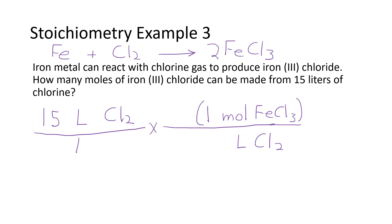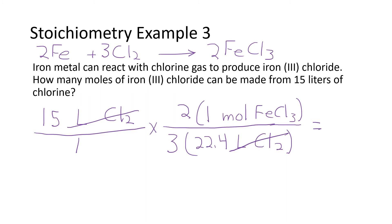I need to balance the equation first. I'll put a two in front of FeCl3, giving six chlorines on the right, so I put a three in front of Cl2 on the left, and a two in front of iron. Now with the correct coefficients: on FeCl3 the coefficient is two; for liters on the conversion chart we have 22.4, and the coefficient on chlorine in the balanced equation is three. Liters of chlorine cancel in the top and bottom, leaving moles of FeCl3. Running through the calculator: 15 times 2, divided by 3, divided by 22.4 gives 0.446 moles of FeCl3.